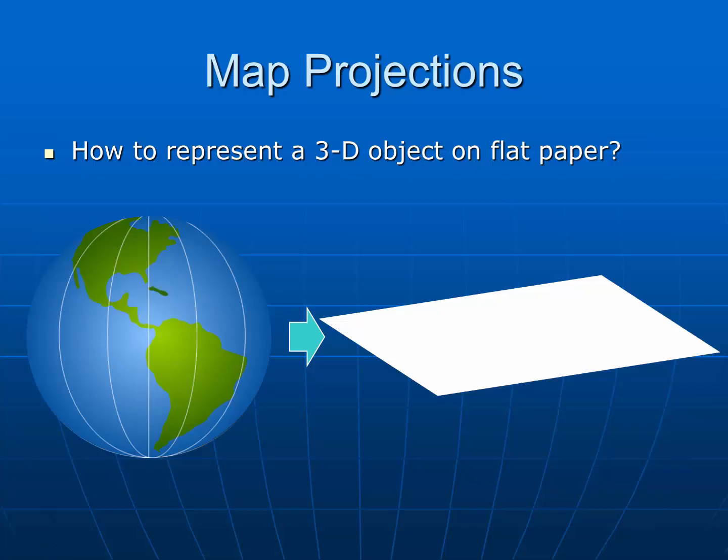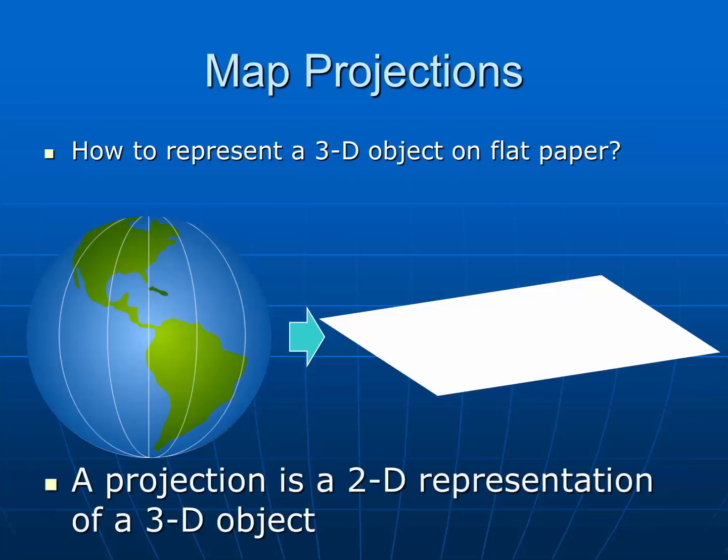A big problem to think about is how is it possible to represent a three-dimensional object on a flat piece of paper? A globe is a tremendously useful item, but if we want to actually go somewhere — if we want a map to find locations, to go to the grocery store or visit a friend — carrying a globe won't be very useful. That's where the idea of projections come in. A projection is a two-dimensional representation of a three-dimensional object.